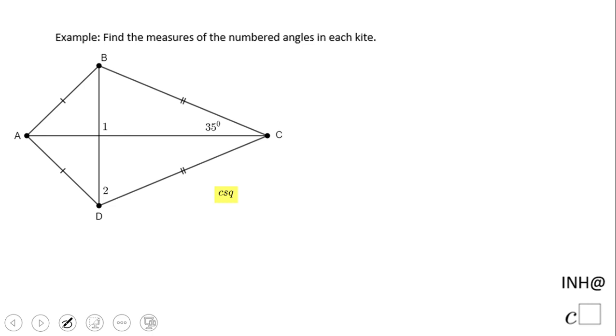Welcome or welcome back, I'm here to help at C-square. In this example, we look at a kite. We have a kite here. We notice these two sides are congruent and these two sides are congruent. That is the definition of a kite. And they ask us to find these numbered angles, angle 1 and angle 2.